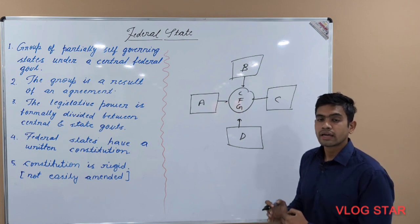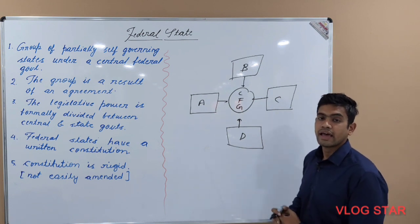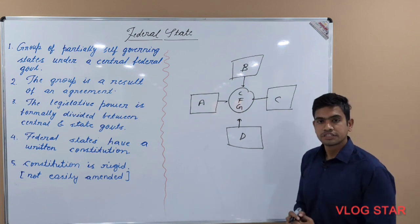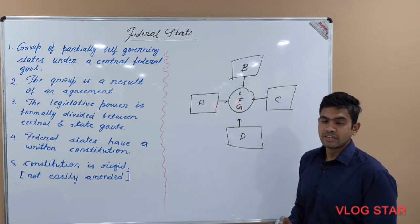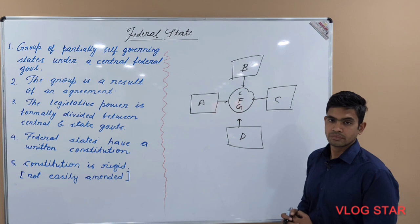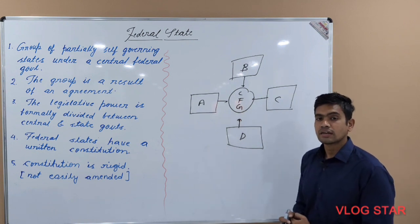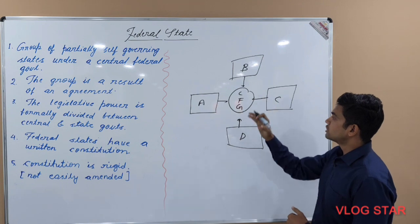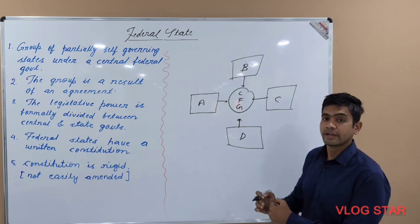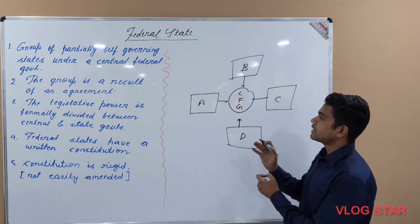For this division of powers, a proper written Constitution is required, because if the Constitution is written there will be no scope for confusion. That is why all federal states have a properly written Constitution. Furthermore, that Constitution should also be rigid — meaning it should not be easily amended — because if it is easily amended, the central federal government may start encroaching upon the powers of the constituent states.